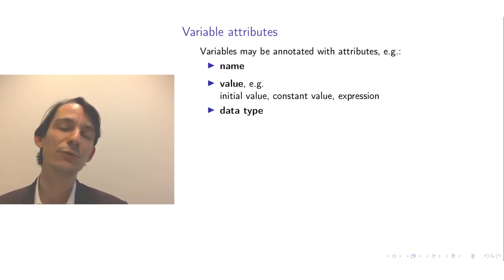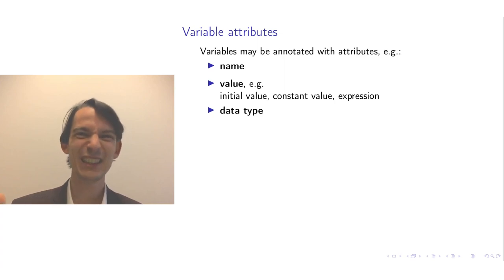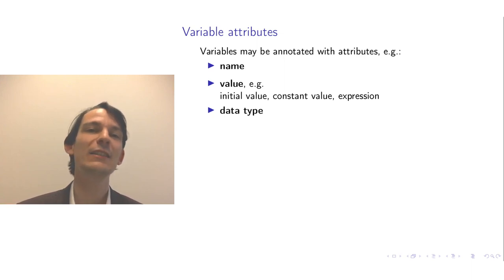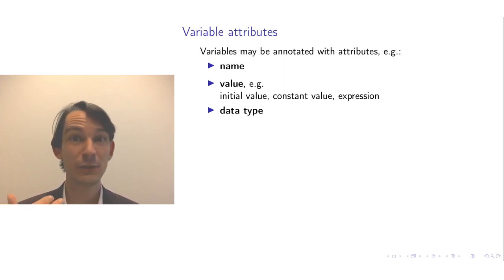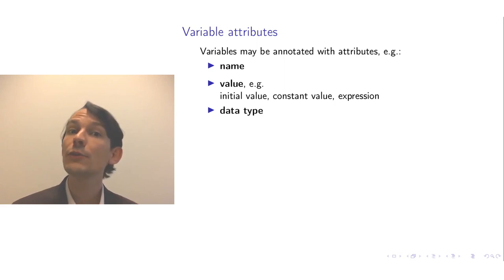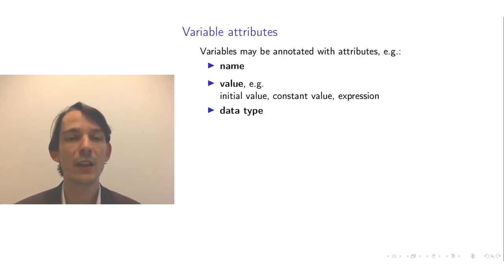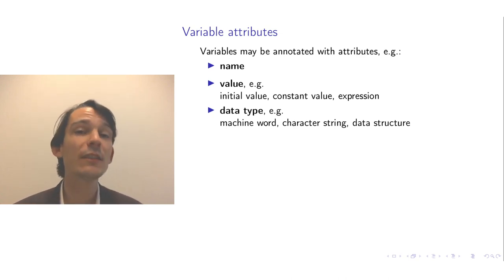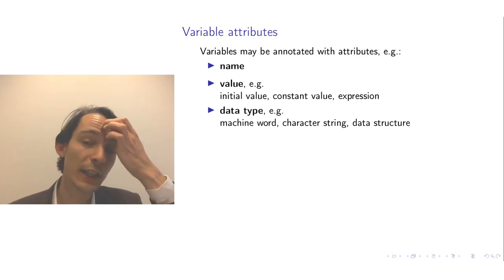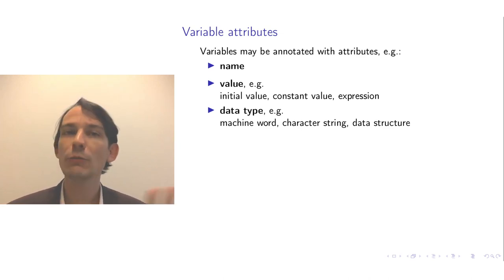Another kind of attribute you can annotate a variable with is its data type. The data type describes a particular structure or encoding of data stored as the value of the variable. If you annotate variables with a data type, you can reject certain data from ever being assigned to such variables. You could have many different data types, and in later lectures we will discuss data types in more detail.